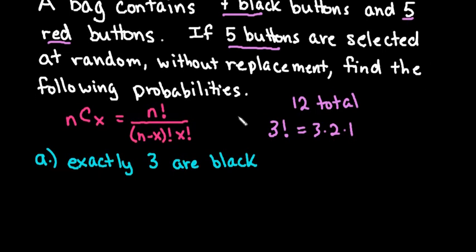So the first situation, we are looking for the probability that exactly 3 are black. For this specific one, that tells us that if we're selecting 5 buttons, 3 of them are black, that means that 2 of them have to be red.